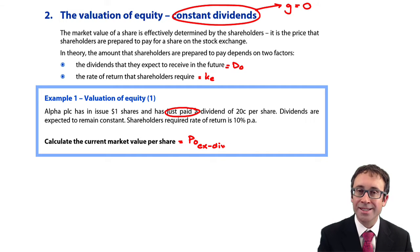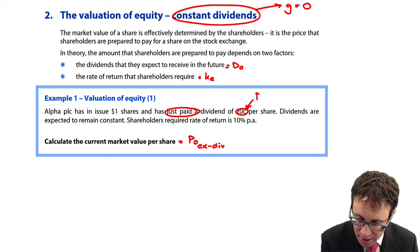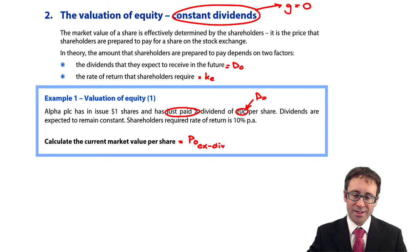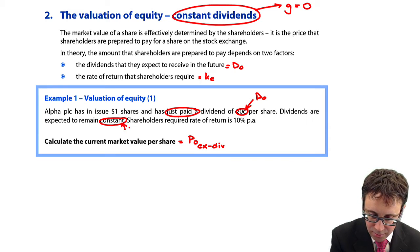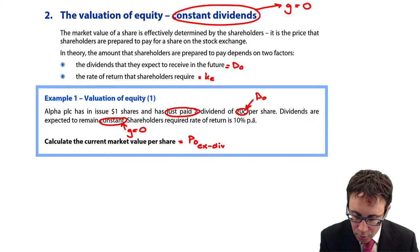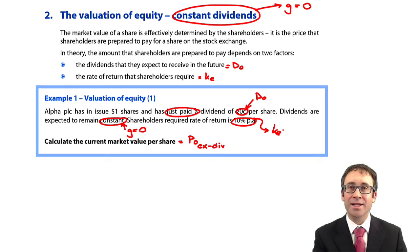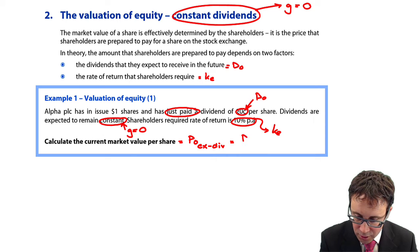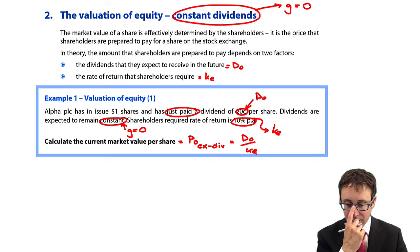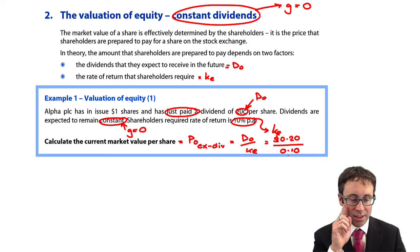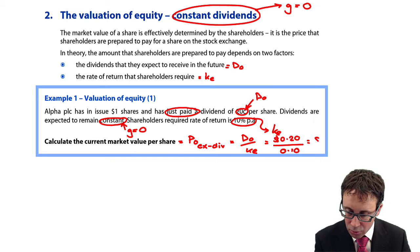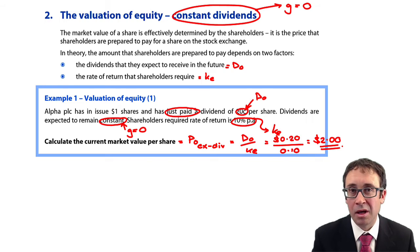We are told that we have just paid a dividend of 20 cents per share. So, that there is our dividend D0, which will be D1, D2, D3, D4, D5, D6 — because dividends are expected to remain constant, so G equals 0. The required rate of return is 10%. To work out your price ex-dividend, we just do D0 divided by KE. So, D0 is 20 cents and the return is 10%, so putting it in as a decimal, 0.10. Tapping that into your calculator should work out at $2. That is the ex-dividend price.